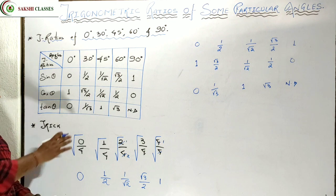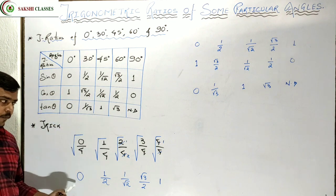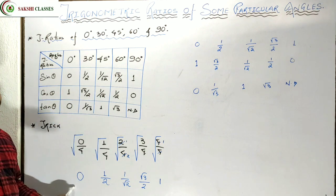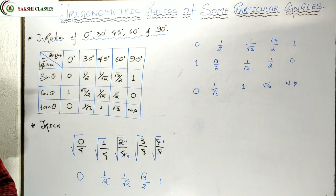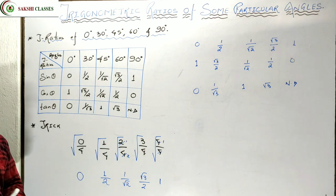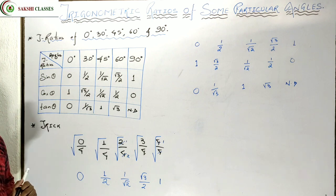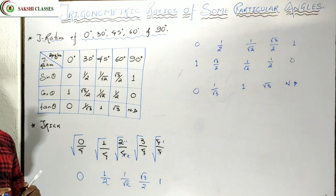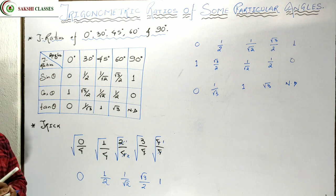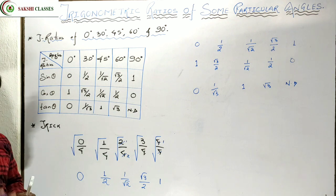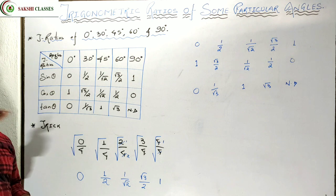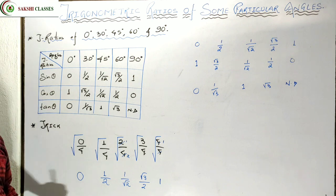So I have helped you memorize the table and also given you a trick. Using this trick you can find sin, cos, tan values. Additionally, from sin you can find cosec, from cos you can find sec, and from tan you can find cot — don't forget. For example, tan 60° is √3, so cot 60° becomes 1/√3 — just take the inverse. Clear everyone?